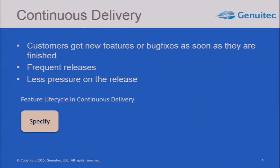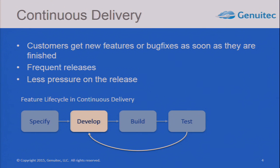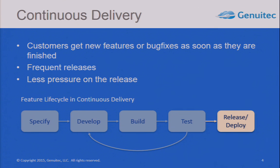The feature lifecycle in continuous delivery is, as you would imagine, a perfect way of doing features. You specify, you develop, you then build the feature — but only that particular feature. You get it tested, and then of course you get some bugs, so you go back to develop, build, test. And once the feature is ready, you release it. That's how you would like to have your software delivered.